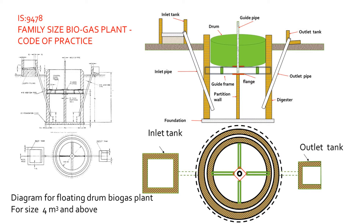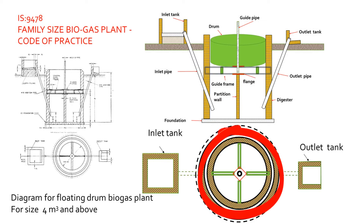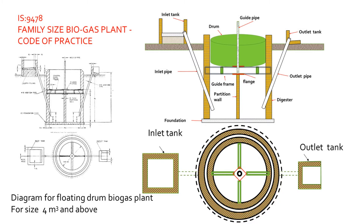We can identify all the parts in this diagram, including the partition wall and guide frame in the section view, as well as the outer wall and inner wall at the top of the digester in the plan view. The floating drum biogas plant was designed by the Khadi and Village Industry Commission in 1962 and is popularly known as the KVIC biogas plant.